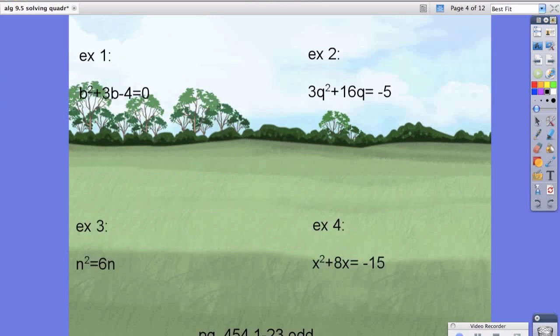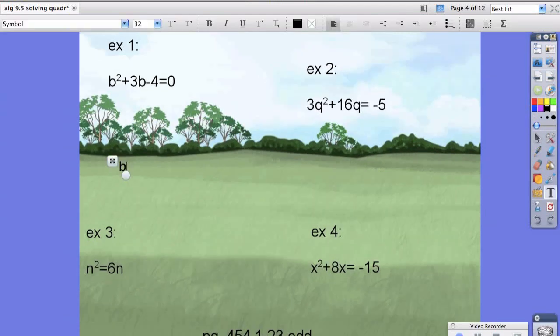The way that we do that is by first factoring. For example 1, if you factor, you would have gotten b plus 4, the quantity b plus 4 times the quantity b minus 1 equals 0.